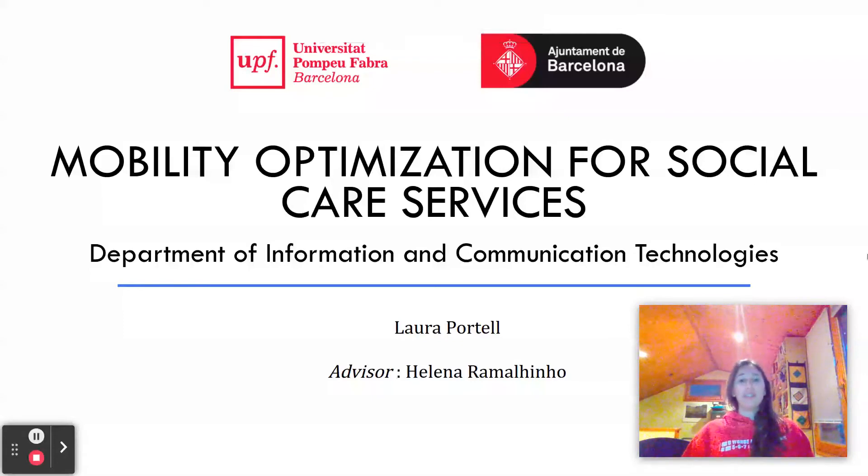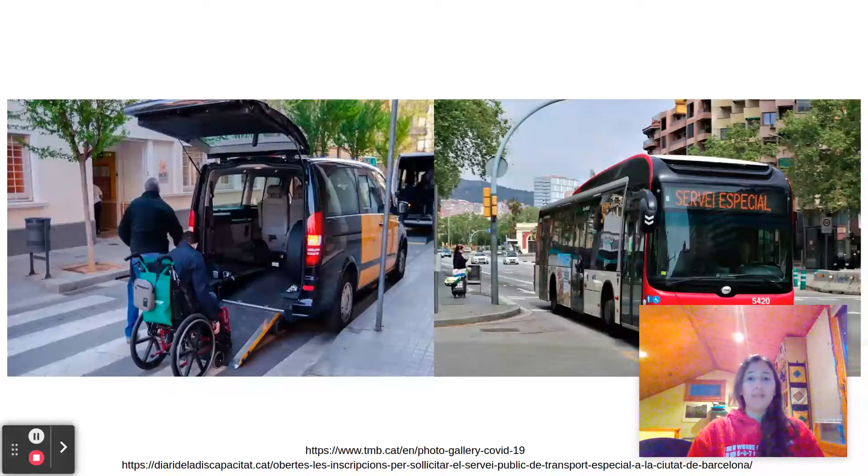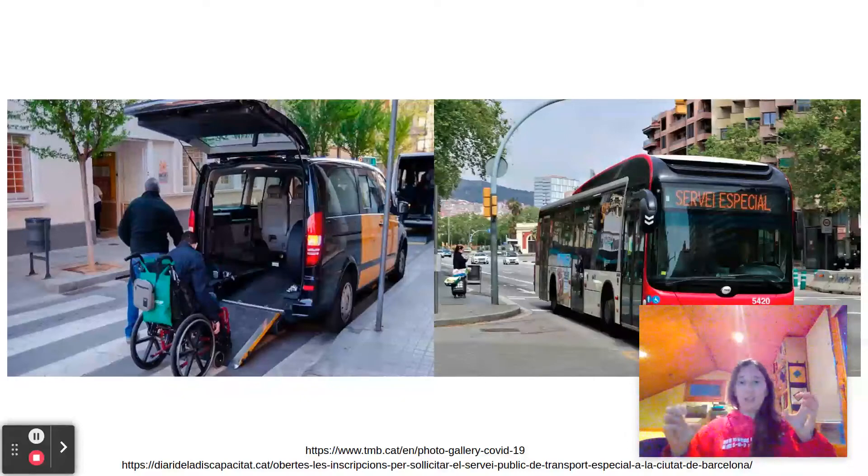To put you a little bit in this situation, Barcelona has a public transportation service, such as many other cities in the world, and it offers for people with reduced mobility a door-to-door transportation service. A door-to-door means that a user requests a pickup and destination location, and they offer a service for this.